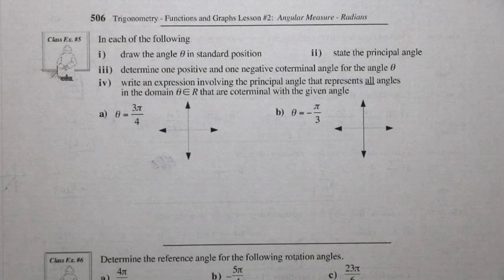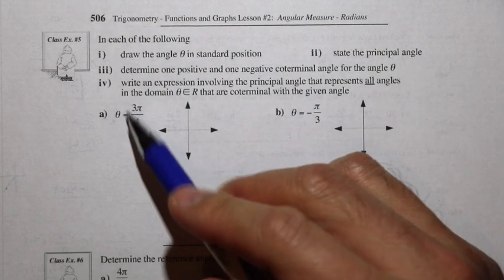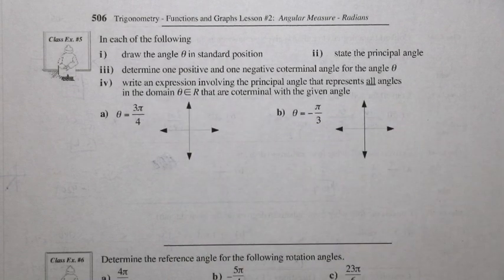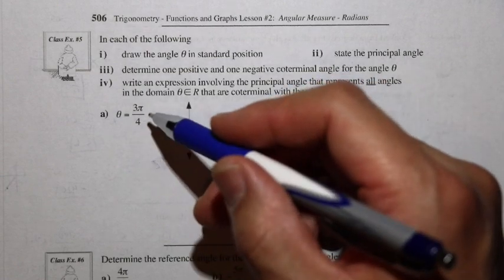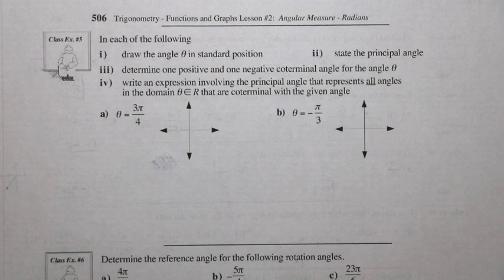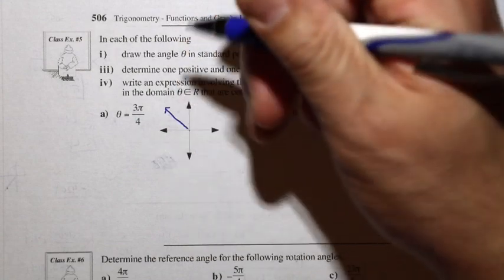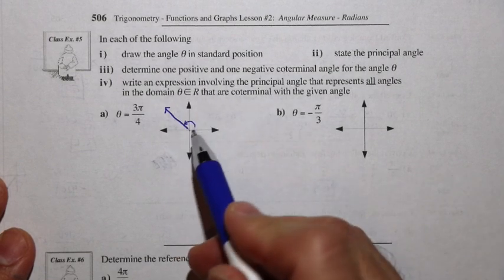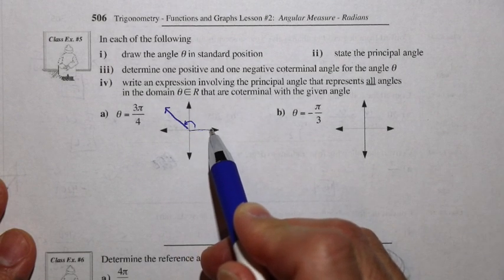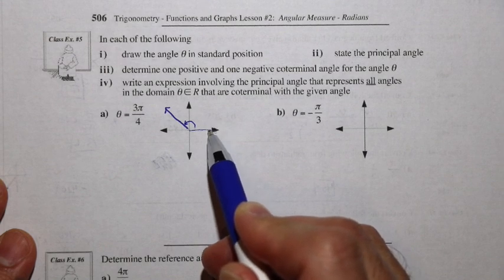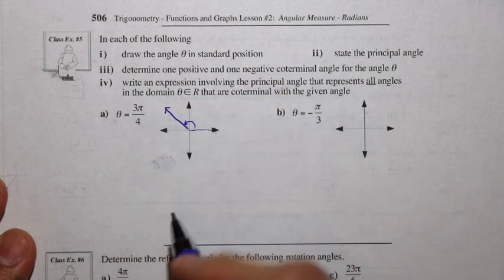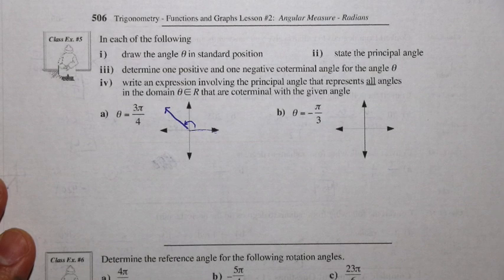Let's look at class example 5 and draw the angle 3π/4. Thinking of π radians as 180 degrees: 180 divided by 4 is 45 degrees, and 45 times 3 is 135 degrees. So this angle sits right in the middle of quadrant 2. An angle in standard position always starts along the positive x-axis, with counterclockwise being positive. This is already the principal angle because it's positive and the smallest positive angle that reaches that terminal arm.